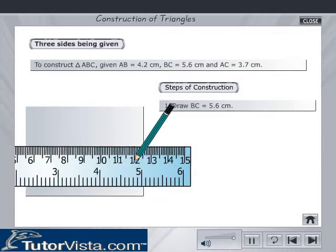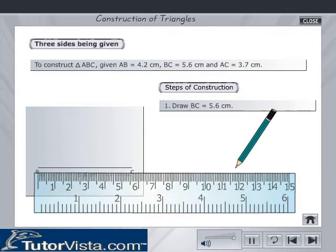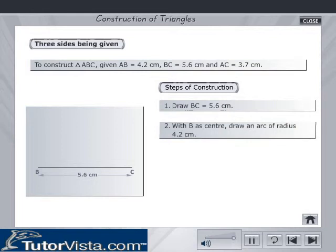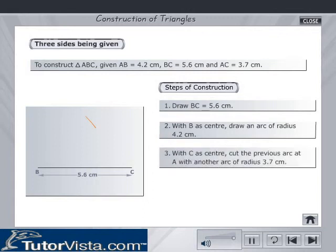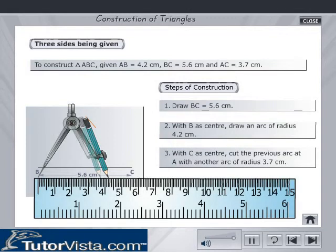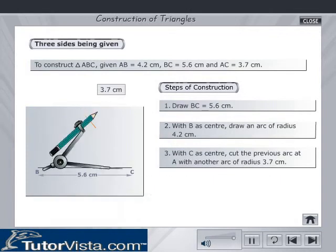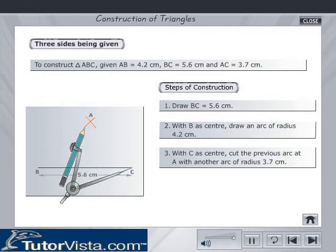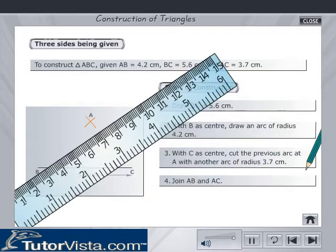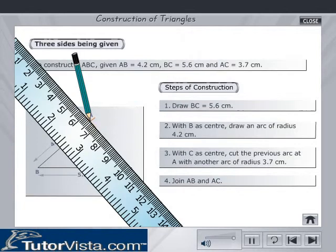Draw BC is equal to 5.6 cm. With B as center, draw an arc of radius 4.2 cm. With C as center, cut the previous arc at A with another arc of radius 3.7 cm. Join AB and AC.